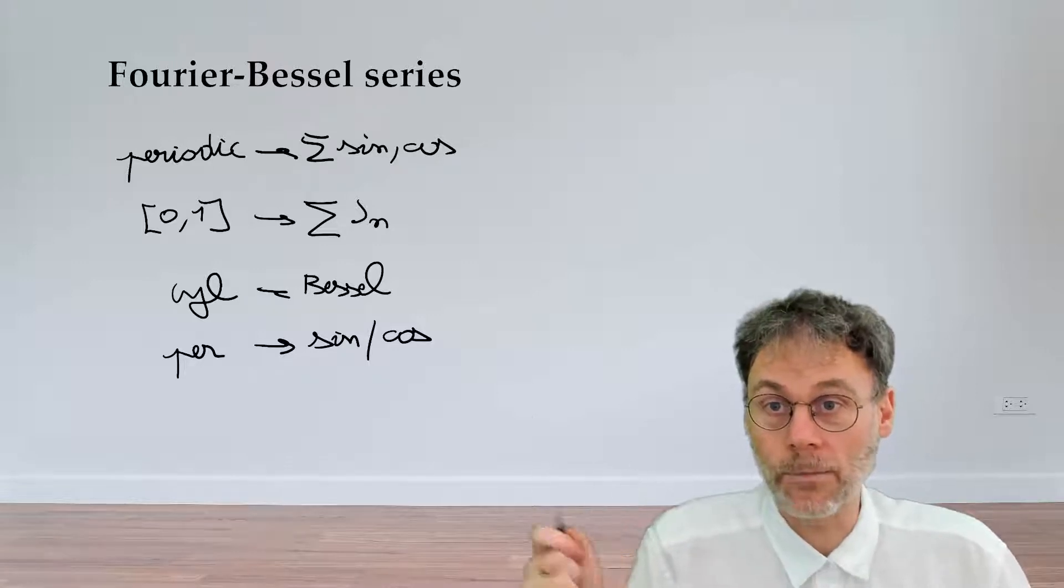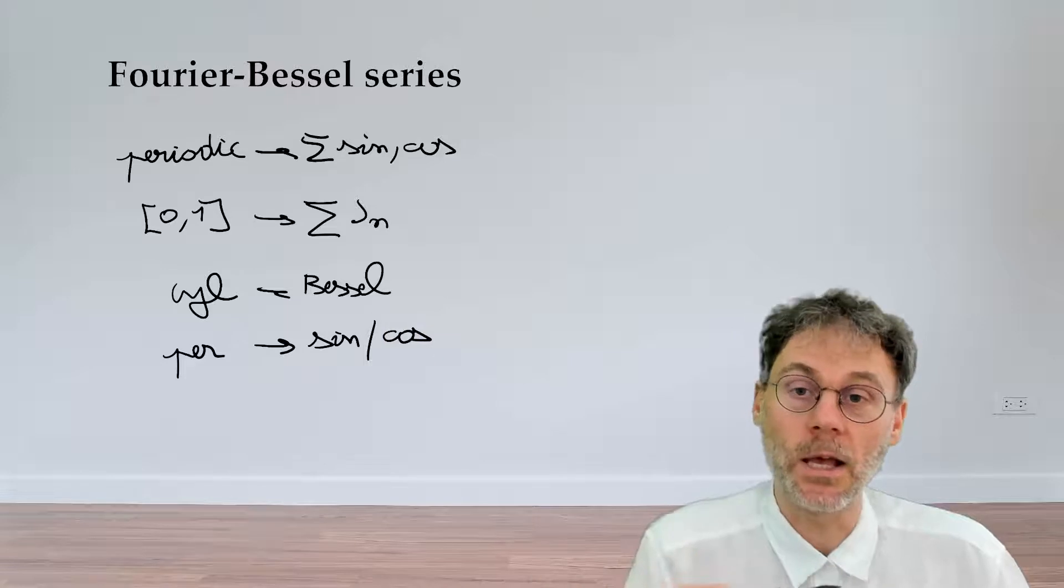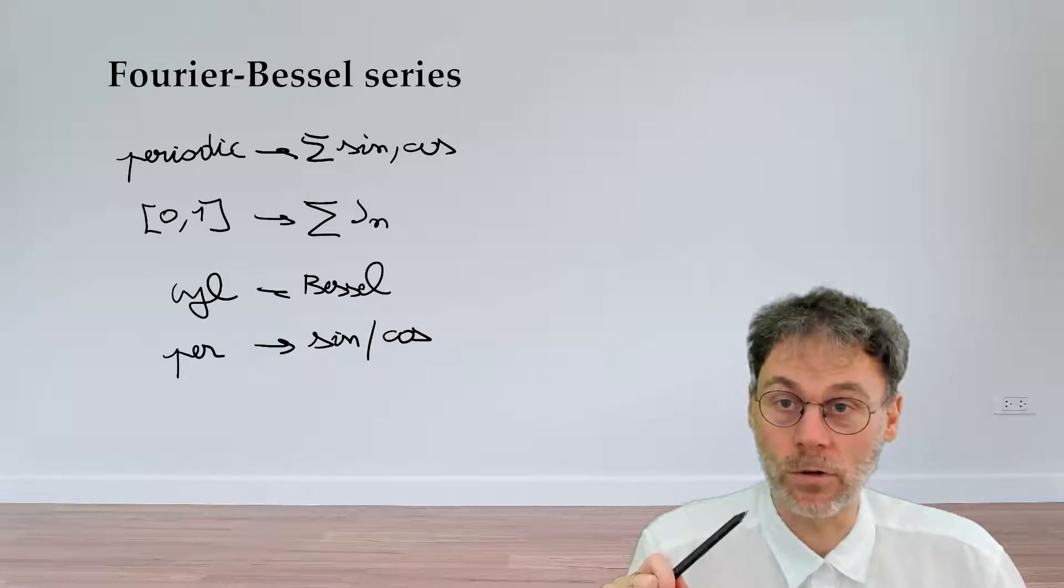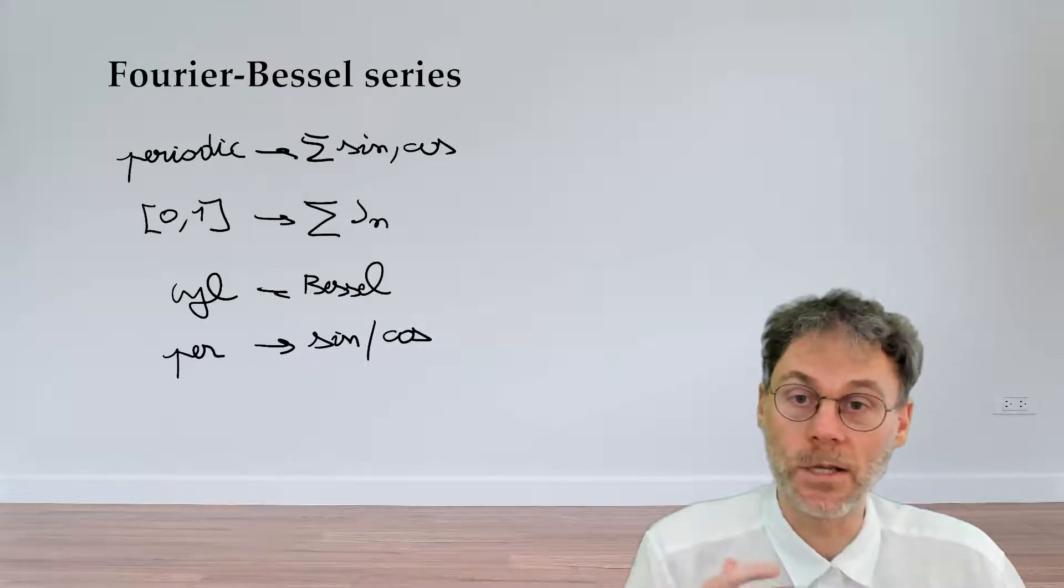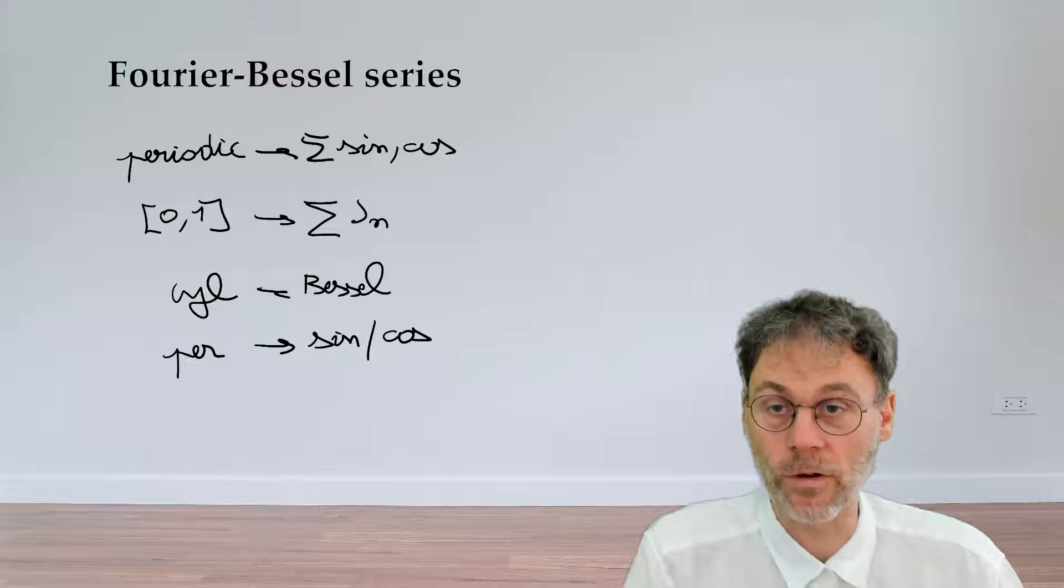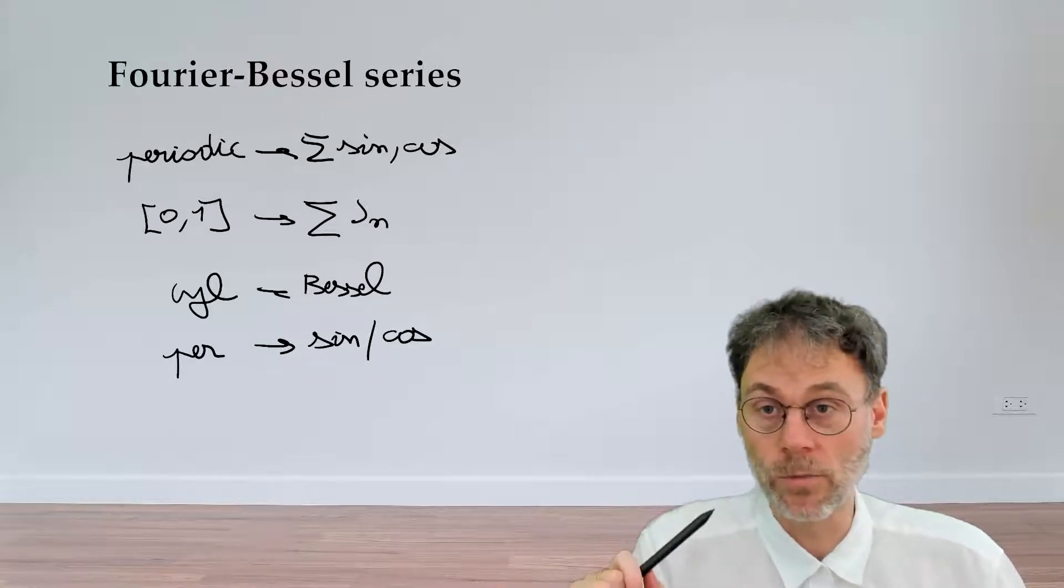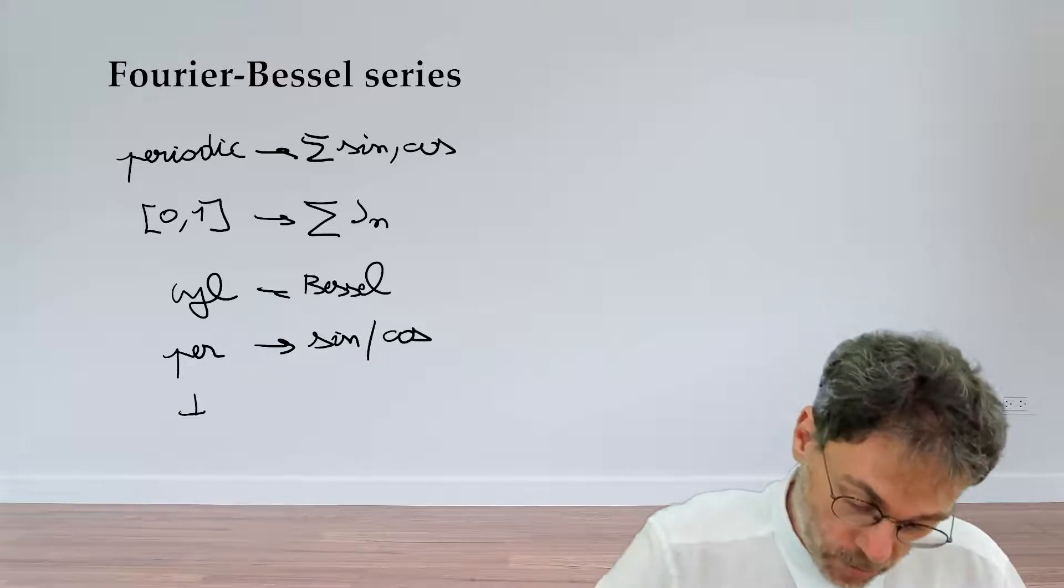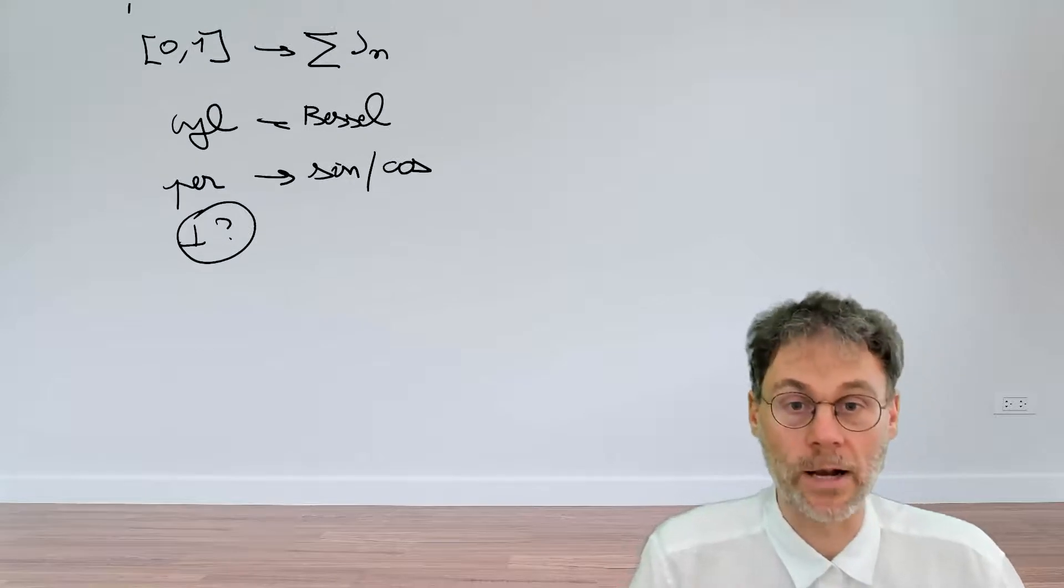Now if you cast your mind back to when you were first exposed to these Fourier series, then you might recall that a very useful tool there was the orthogonality between sines and cosines. Thanks to that, it was very easy to derive the expansion coefficients in that series expansion. We're going to do something similar for our Fourier-Bessel series. We're also going to look at an orthogonality relationship, but of course a slightly different orthogonality relationship.